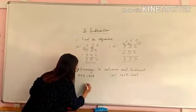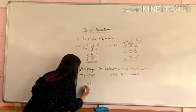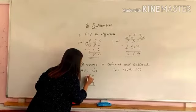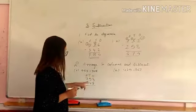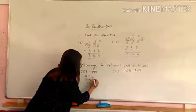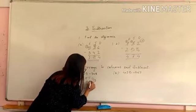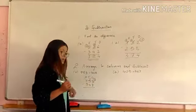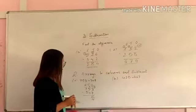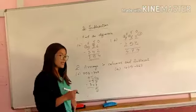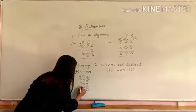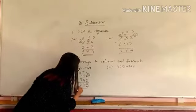So let's write here, 753 minus 348. This is our one's place, 10's and 100's. Now let's subtract. 3 minus 8, we all know we cannot. So what we will do? Borrow, 13, this will become 4. 13 minus 8, 5. Very good. 4 minus 4, 0.